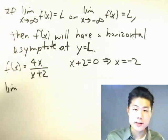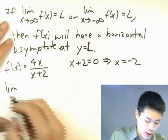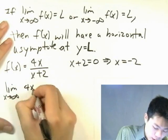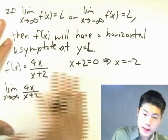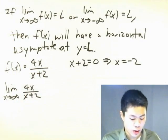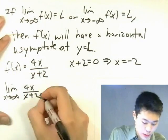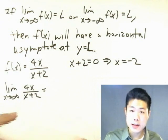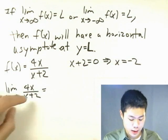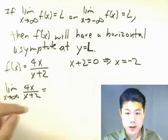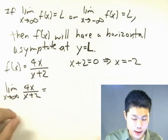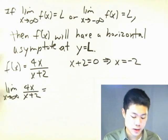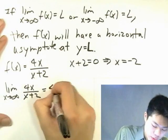Now we're going to look for horizontal asymptotes. We look at the extreme left and right ends of the graph. The top and the bottom both have the same degree — 1 and 1. Therefore, the answer is going to be the ratio of the leading coefficients: 4 over 1, which is 4.